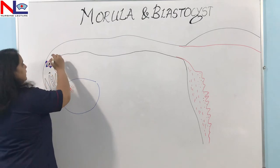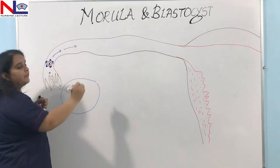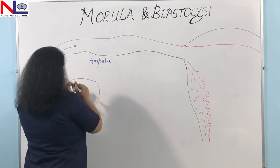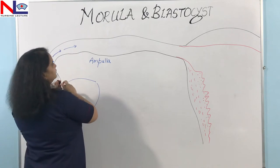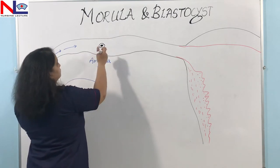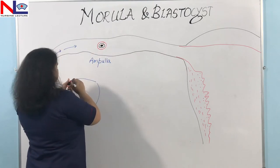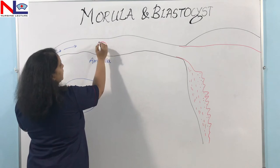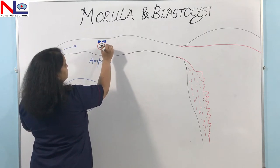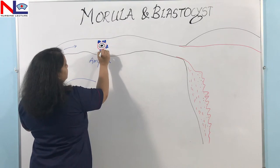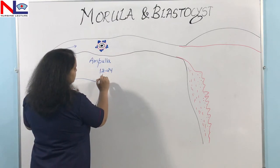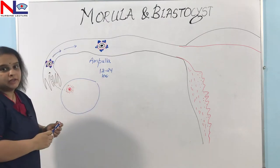This secondary oocyte then moves toward the widest and longest part of the uterine tube, that is called the ampullary part or the ampulla. Here is the secondary oocyte, covered by the zona pellucida layer and surrounded by the layer of granulosa cells known as the corona radiata. This secondary oocyte remains here viable for about 12 to 24 hours so that it may be able to be fertilized during that period.